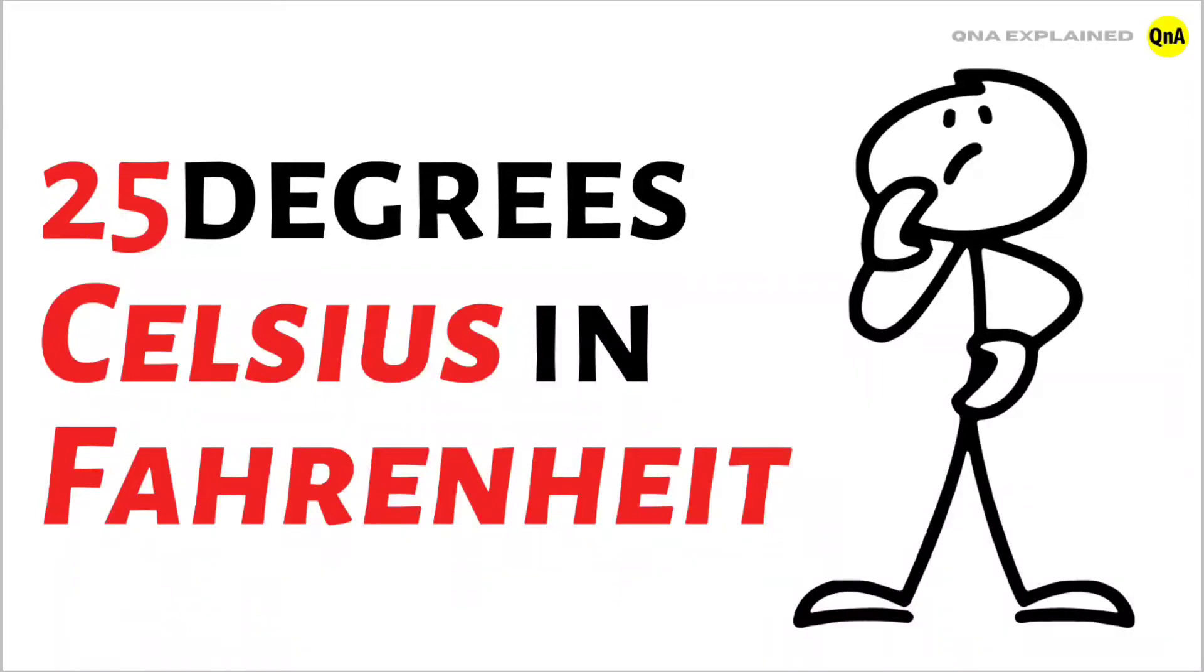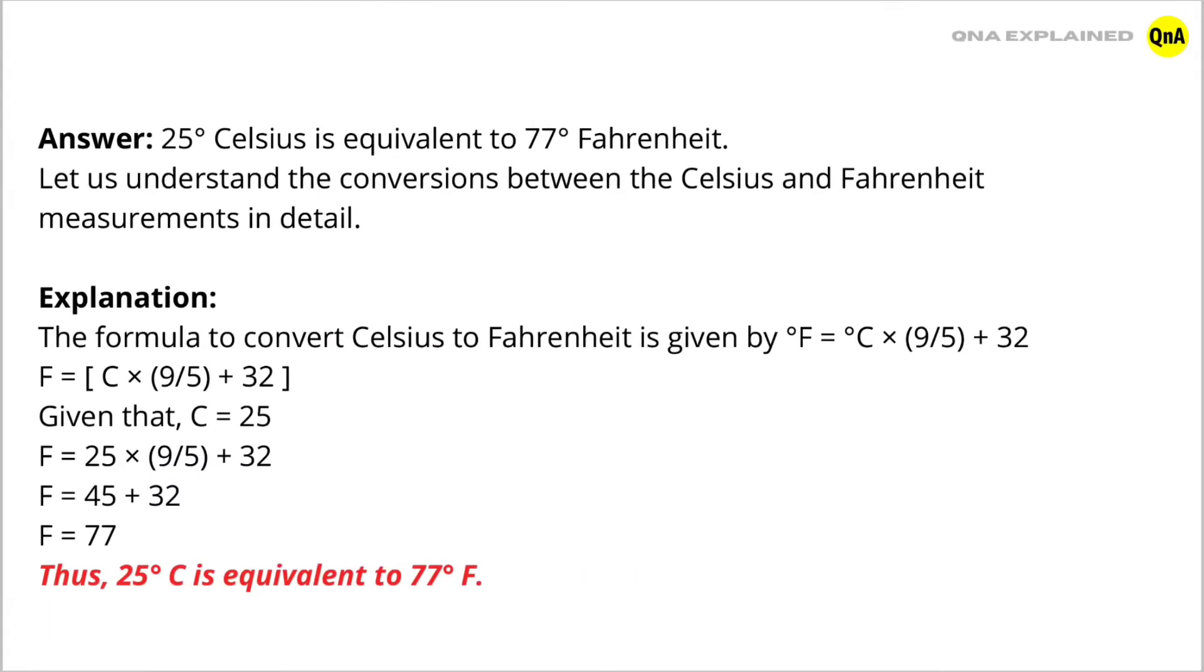25 degrees Celsius in Fahrenheit. The answer is 25 degrees Celsius is equivalent to 77 degrees Fahrenheit. Let us understand the conversion between the Celsius and Fahrenheit measurements in detail.